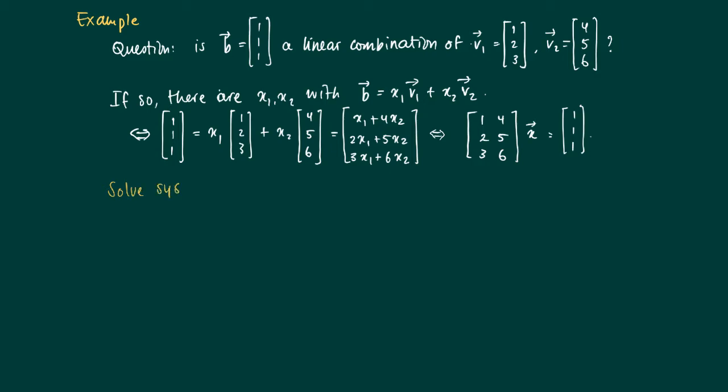So actually we try to solve a system of linear equations here. We try to find x1 and x2 such that the equation x1 plus 4x2, etc equals [1,1,1] is valid.